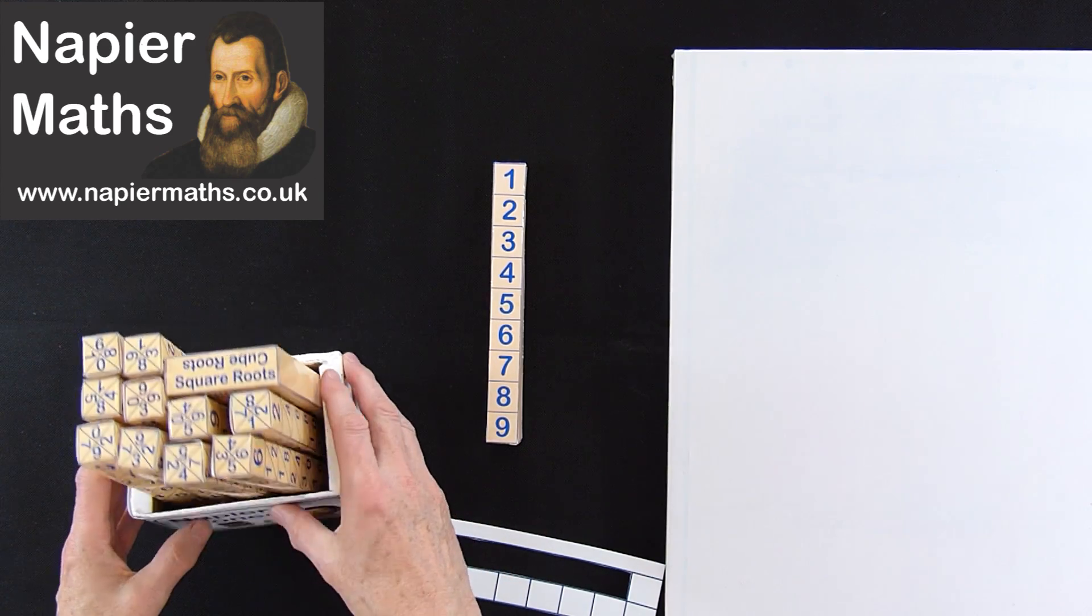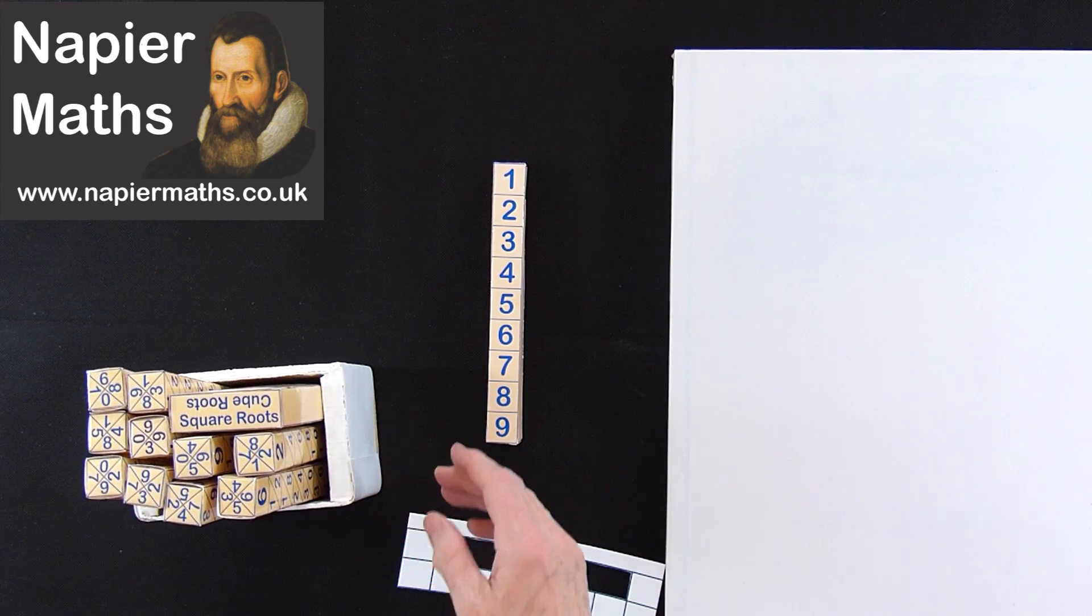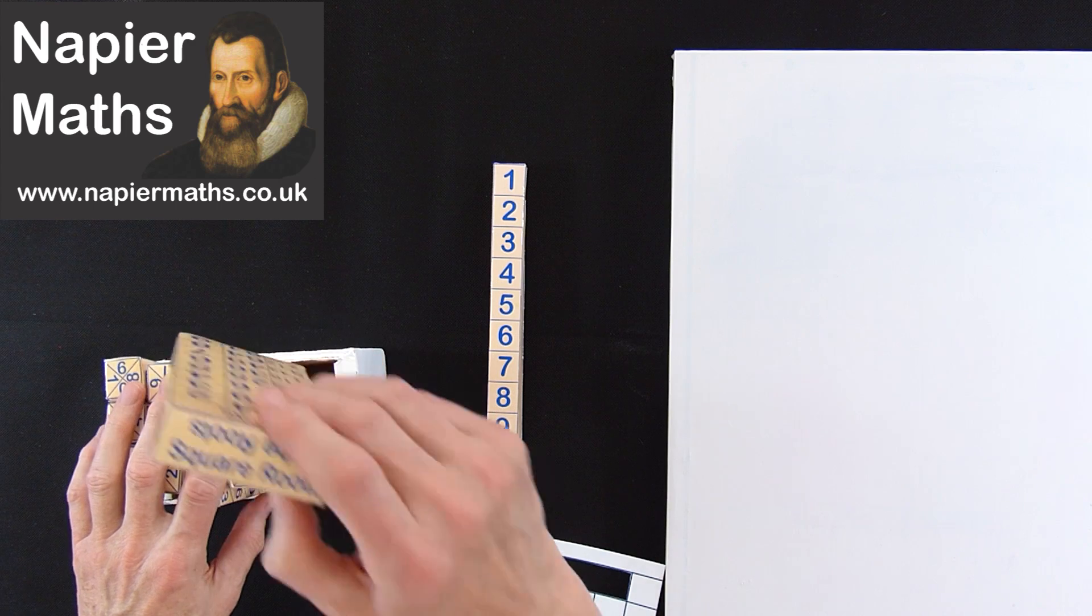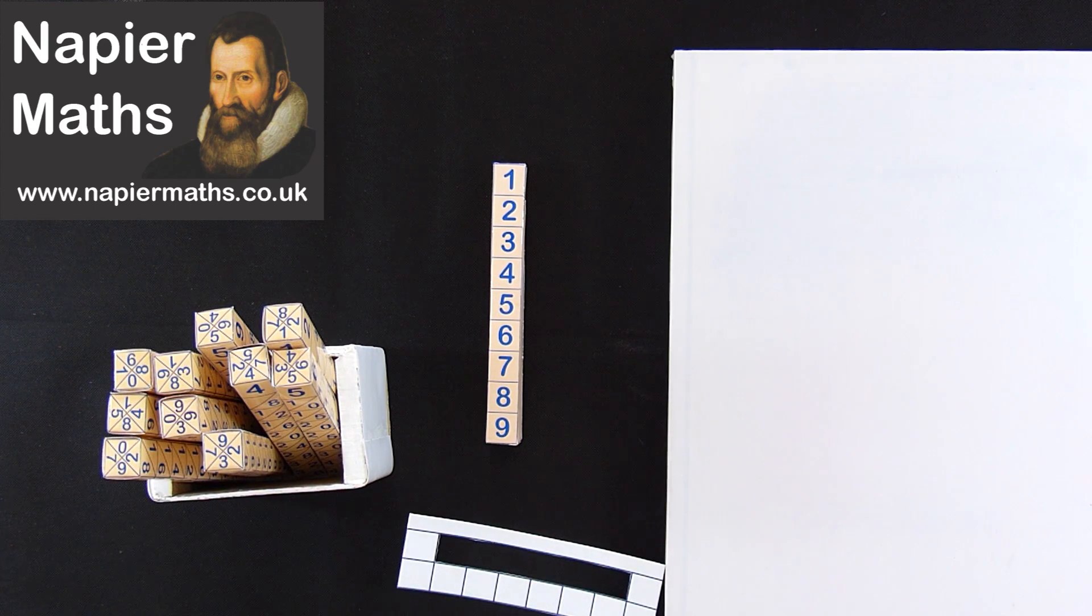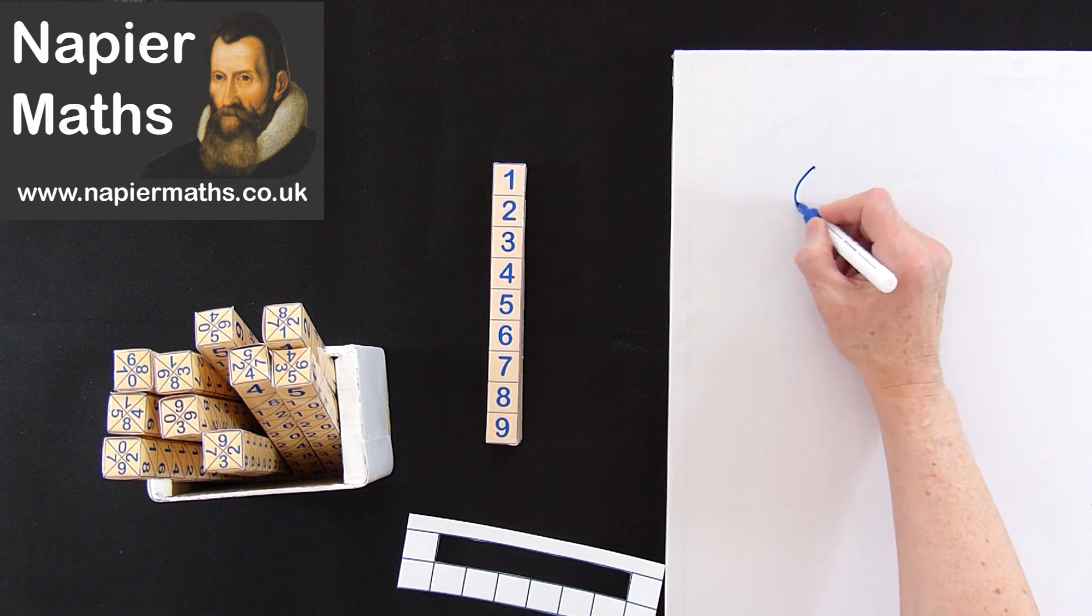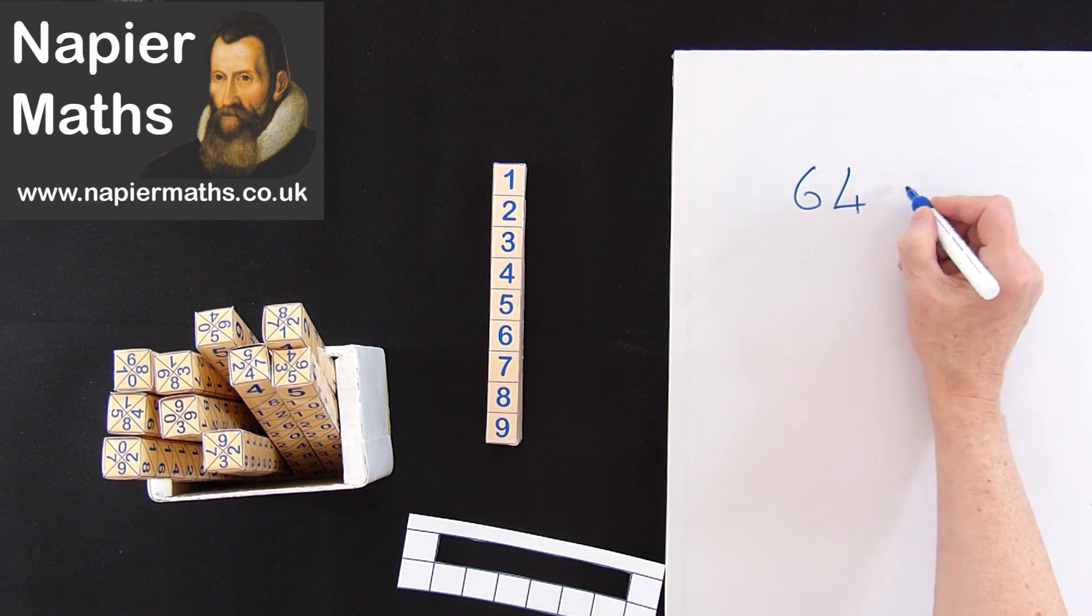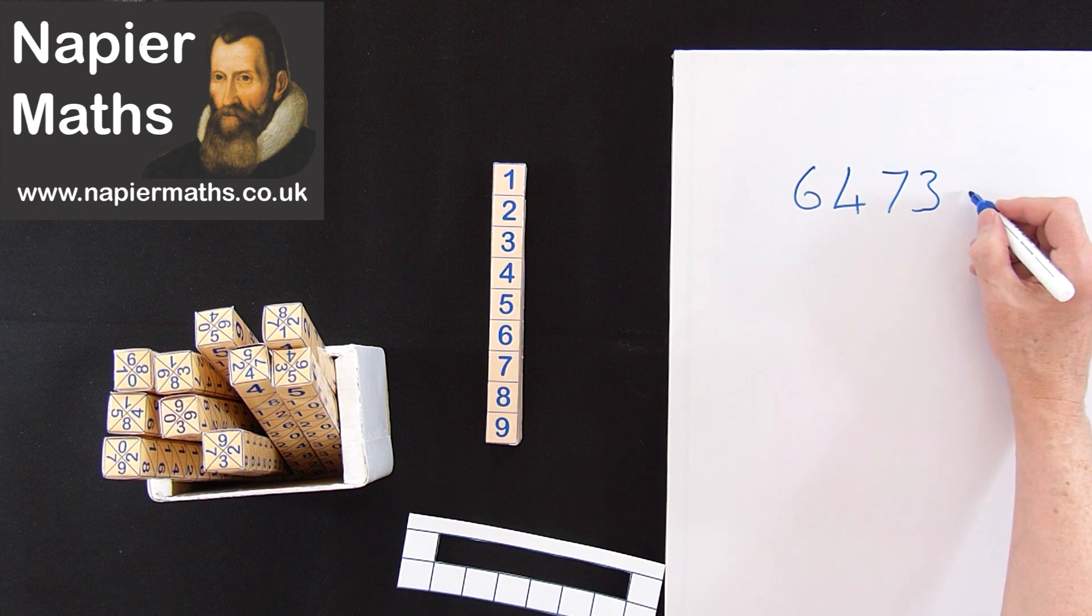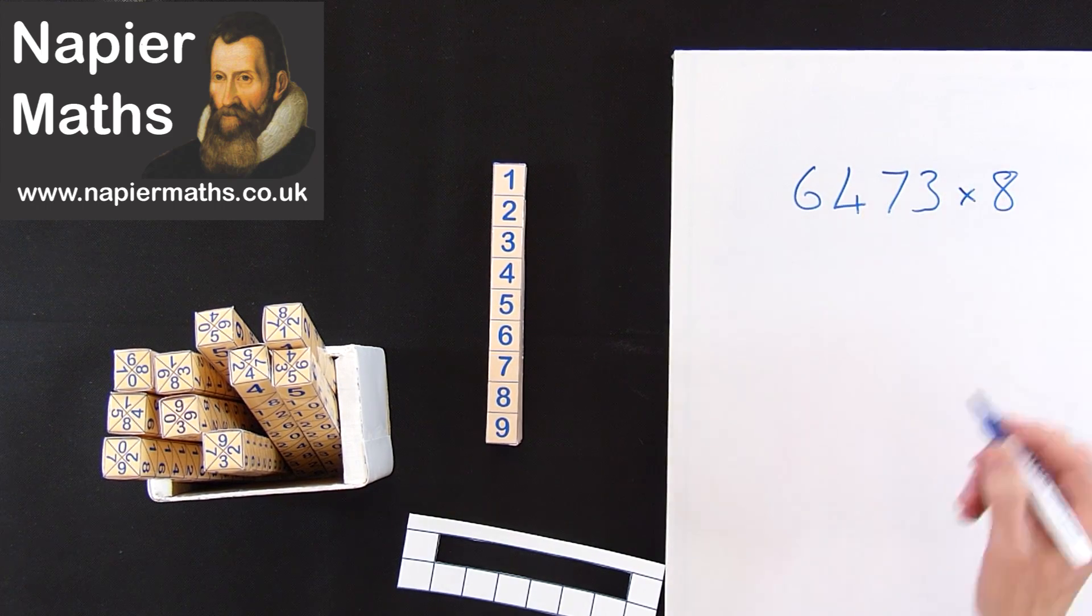I'm not going to use square roots today so I'll leave the square roots bone to the side. I'm going to multiply 6473 by 8.